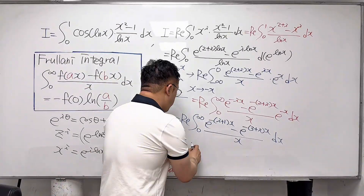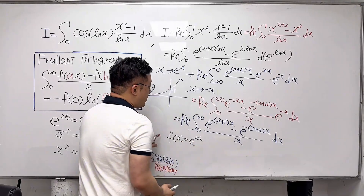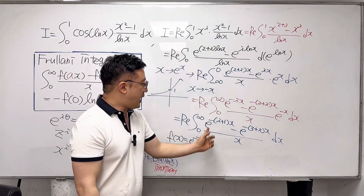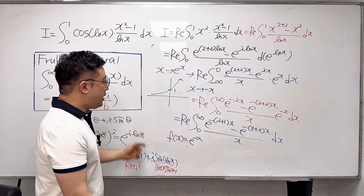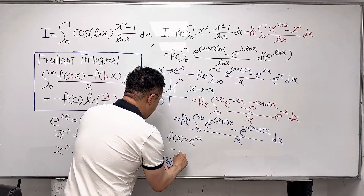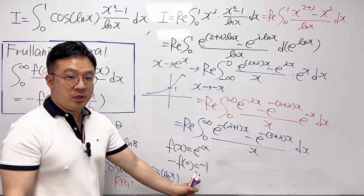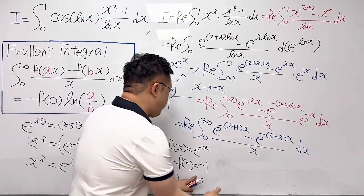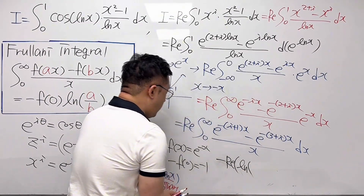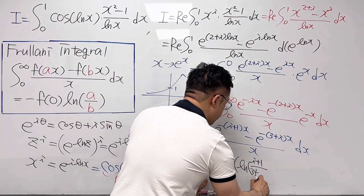From this, let me call f(x) as e^(−x). We can now apply the Frullani integral by setting a = i+1 and b = 3+i. Since negative f(0) equals negative 1, what we get is negative the real part of ln((i+1)/(3+i)).